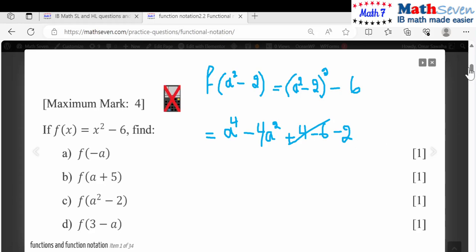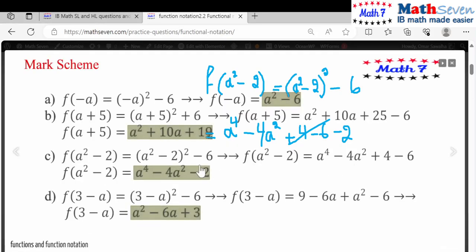As for this part, let's check it quickly. So it becomes a to the power 4 minus 4 a squared minus 2. There you go, a to the power 4 minus 4 a squared minus 2, you're good to go.